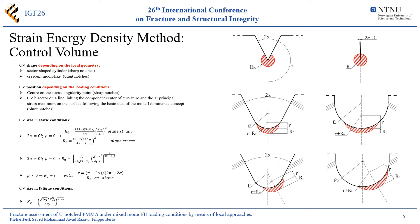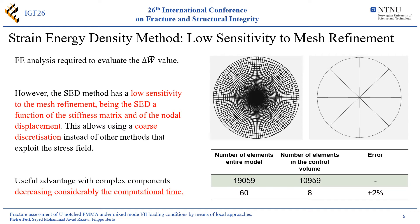Regarding the control volume, this is needed to evaluate the average value of the strain energy density. It has a characteristic length L0 that is independent on the local geometry and on the loading condition. It is assumed to be a material property and it can be evaluated through the mechanical properties of the material. The control volume shape, however, varies with the local geometry, while its position is determined following the mode 1 dominance concept. This method leads to the important advantage of having a low sensitivity to mesh refinement, because the value considered by the method is evaluable directly from the stiffness matrix and the model displacements. This property is particularly useful dealing with complex components, reducing the computational time required.